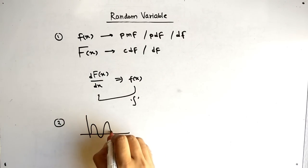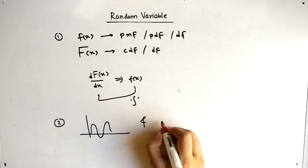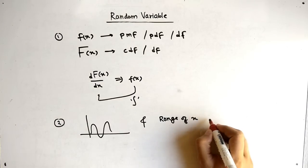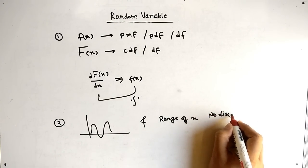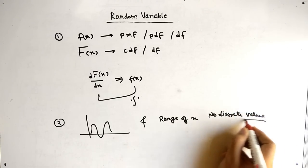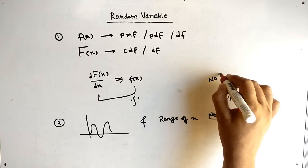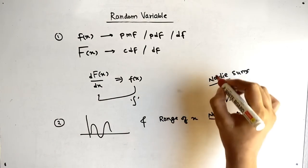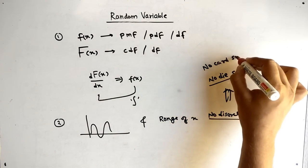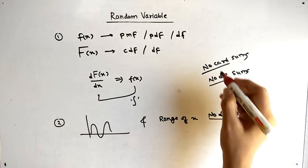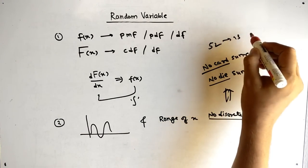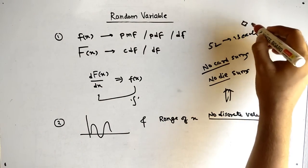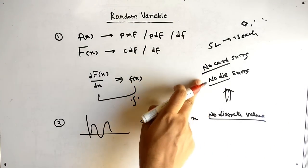The second basic is that the graph is always a continuous graph, and we will always have a range of x — no discrete value. No discrete value means no die problems, because when we throw a die we get a discrete value. No card problems either — when we talk about cards, we have discrete values like 52 cards and 13 colored cards.